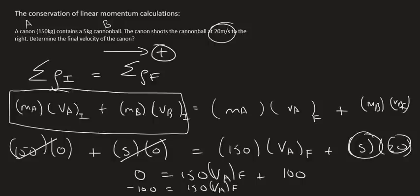You can then solve for velocity final by saying negative 100 divided by 150, and so you end up with the final velocity for A, which is the cannon, of negative 0.67 meters per second.